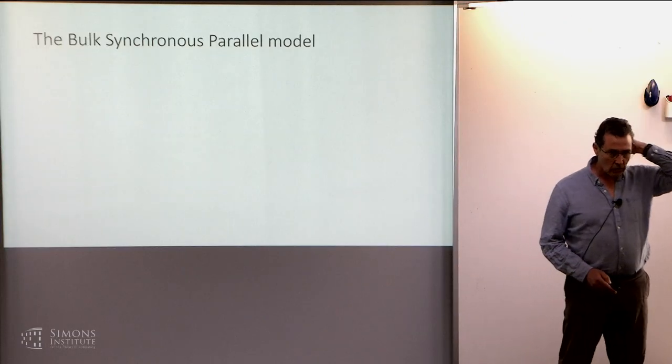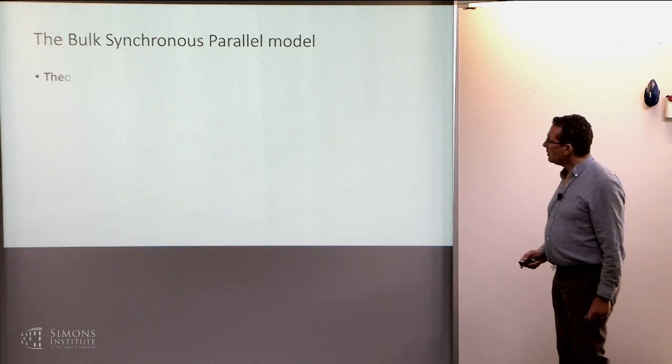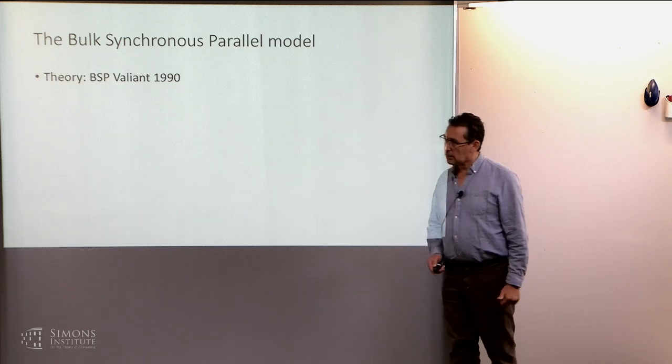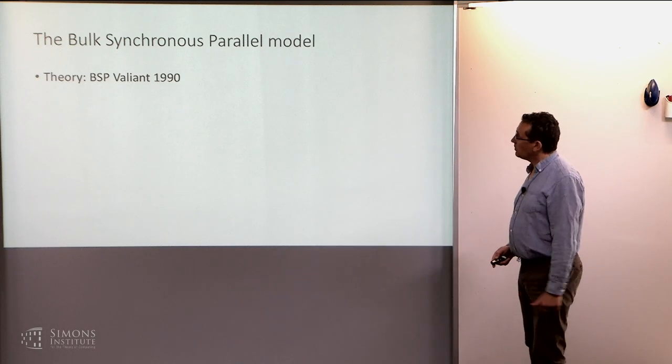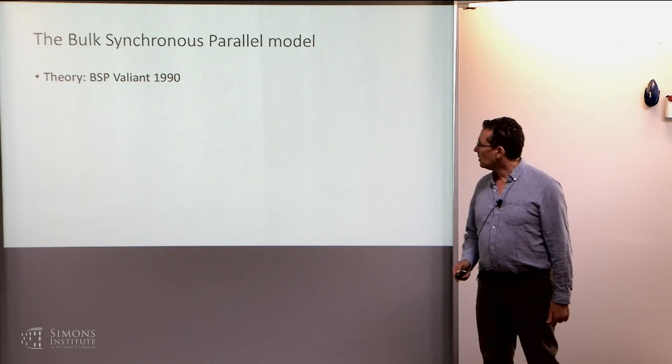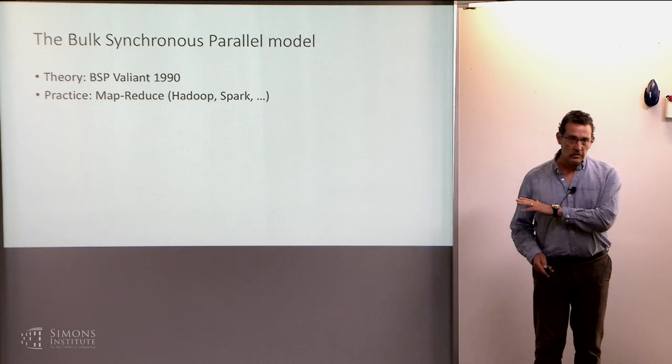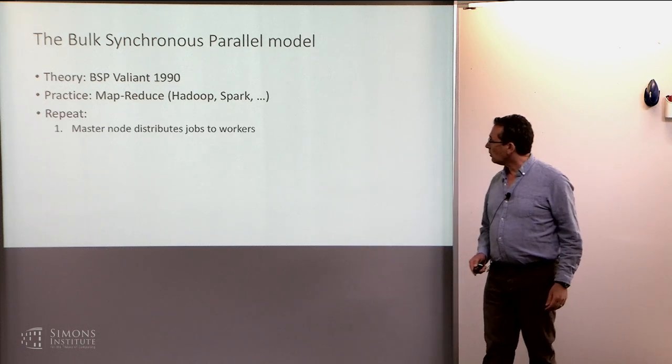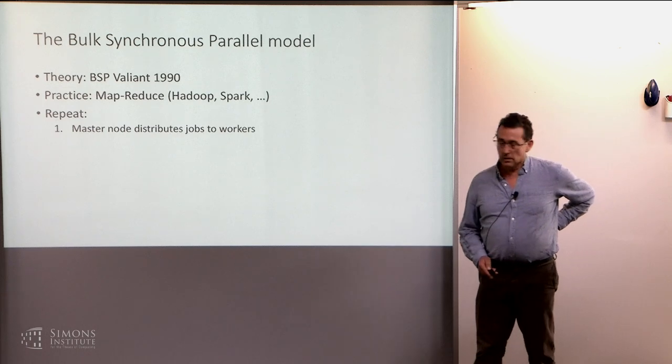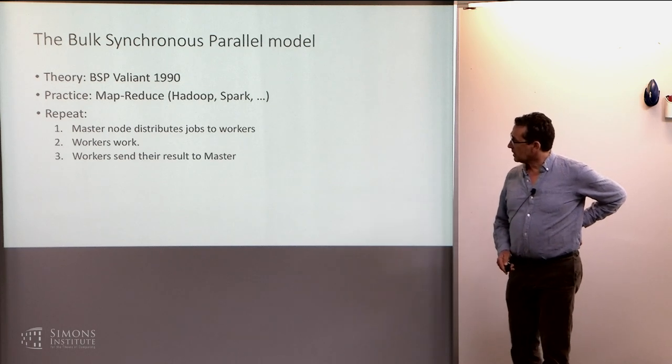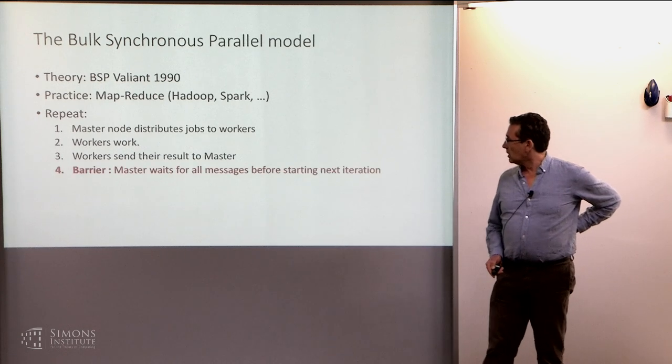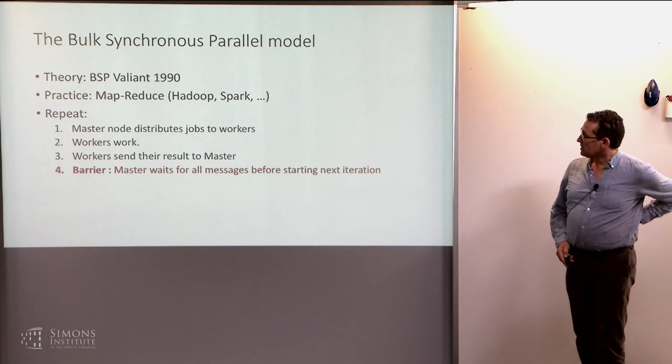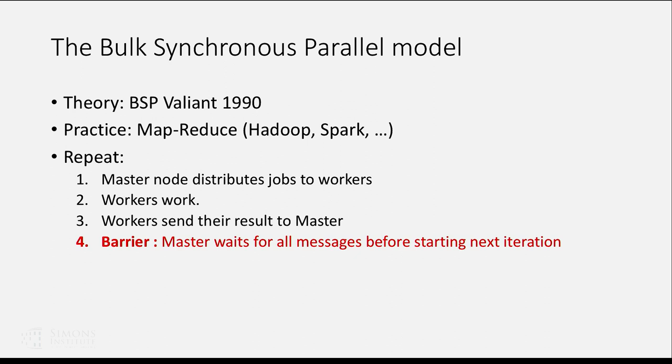There is a standard model for dealing with this. It's called the bulk synchronous parallel model, which is what Valiant invented in 1990. And this is one part of theory that really had a huge effect on practice. MapReduce, Hadoop, Spark, they're all based on that. They're all based on this idea. And the basic protocol is the following. Master node distributes jobs to workers. Workers work. Then the workers send their result back to the master. And then there is a barrier. So the master waits for all message before starting its next iteration. And it's also called, in more hardware setups, it's called barrier synchronization.